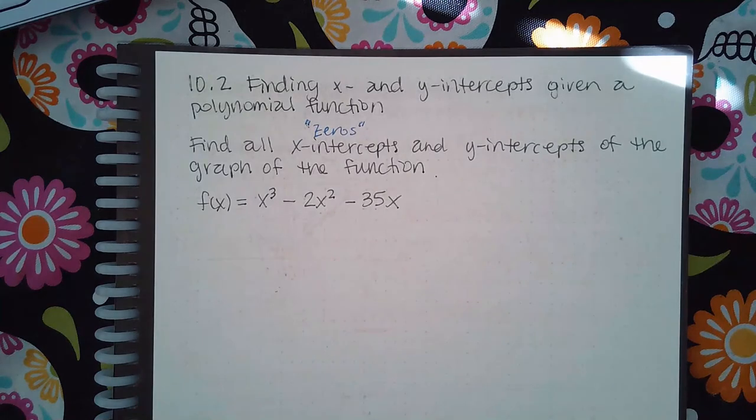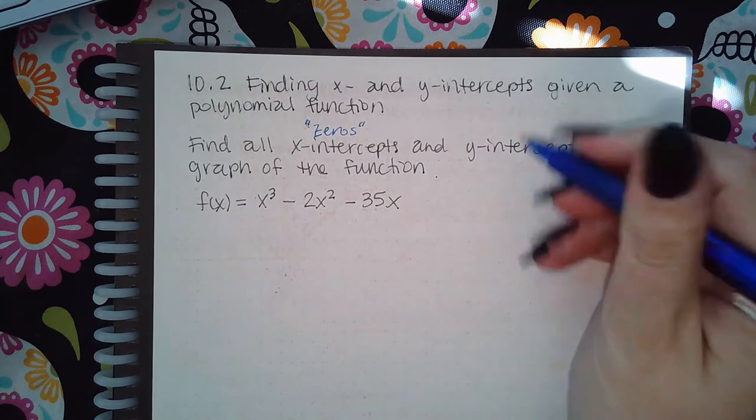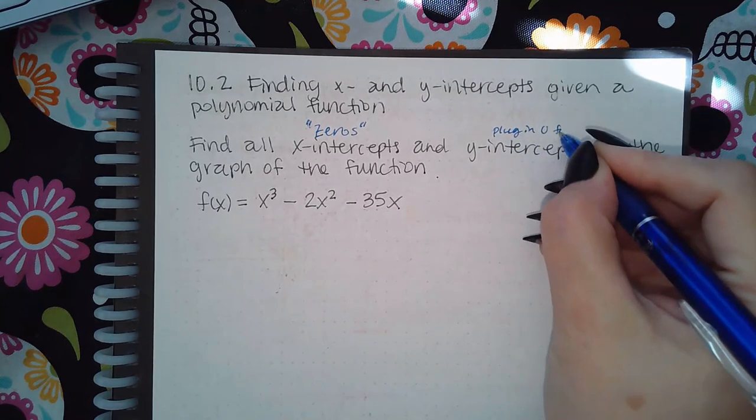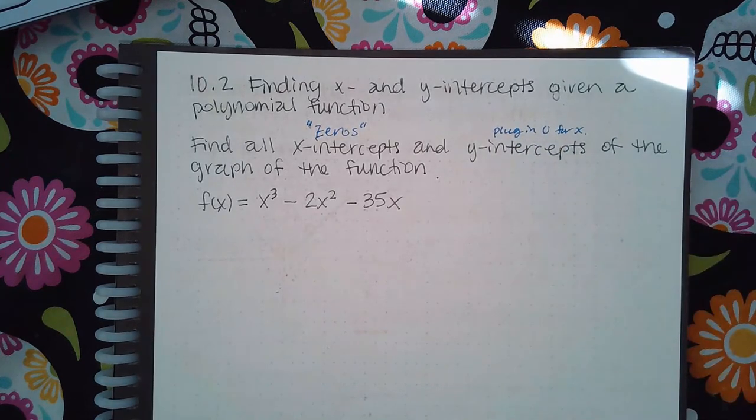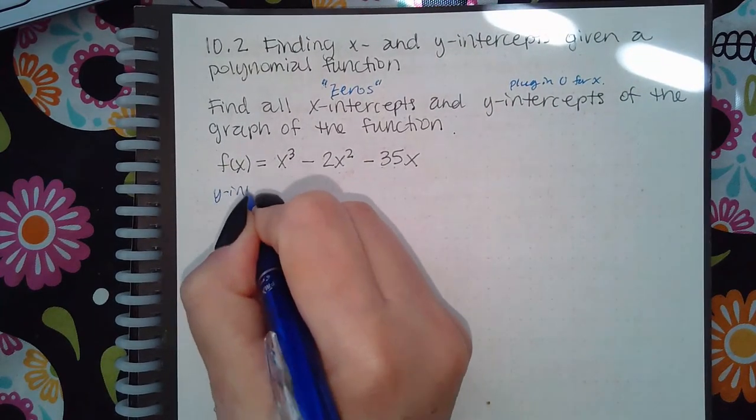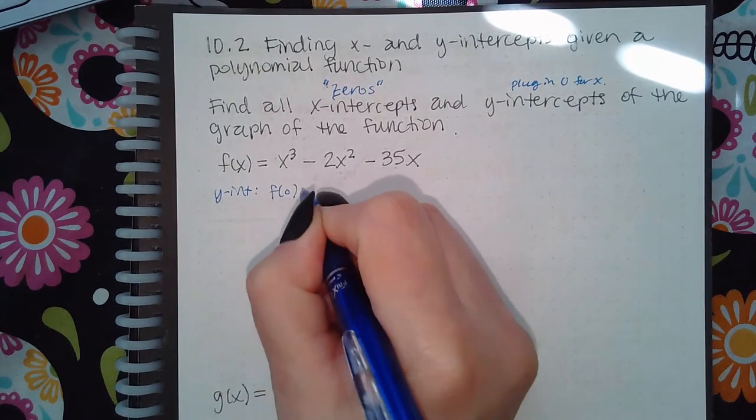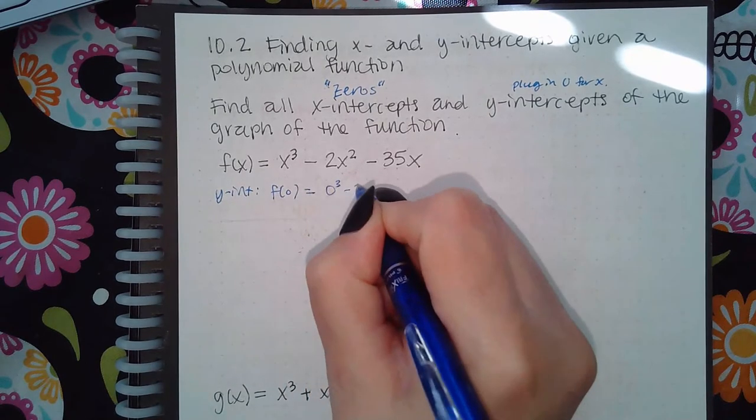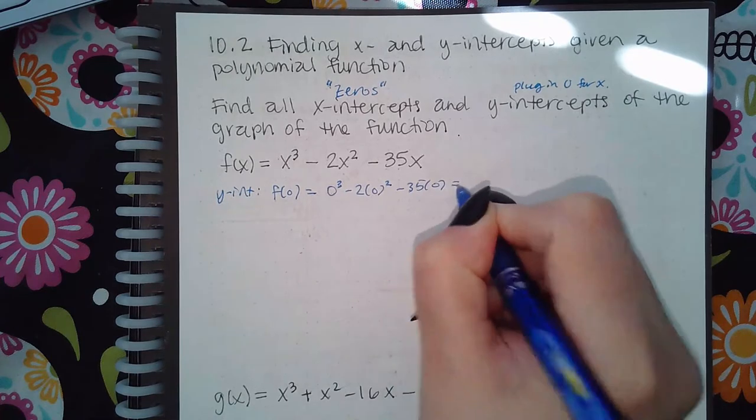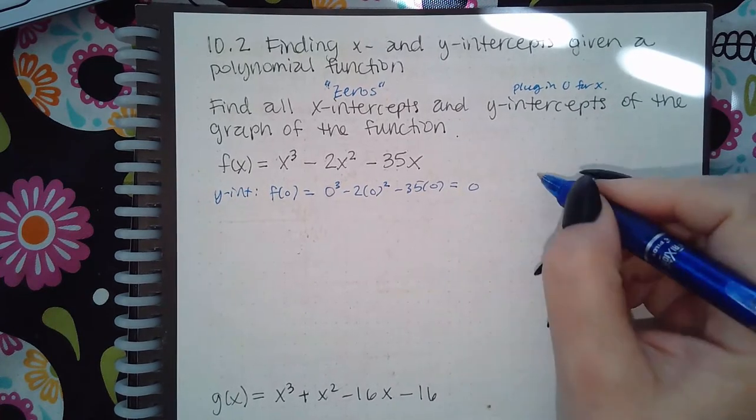The y-intercept is easier because all you do is plug in 0 for x and find y. Normally I like to do the y-intercept first, so that's basically just f(0). So 0 cubed minus 2 times 0 squared minus 35 times 0, and I get the value 0.